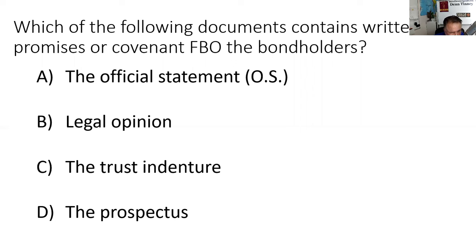I tell municipal financial advisors: even though you don't have to provide an official statement, people have grown accustomed to it — when you sell the bonds, people want something to make an informed decision. That's the official statement. The MSRB can make underwriters and advisors provide it, but they don't have power over the municipal issuer. The legal opinion is done by bond counsel, paid for by the issuer.